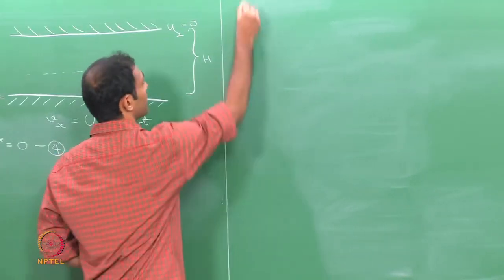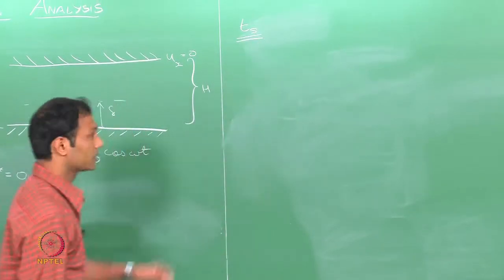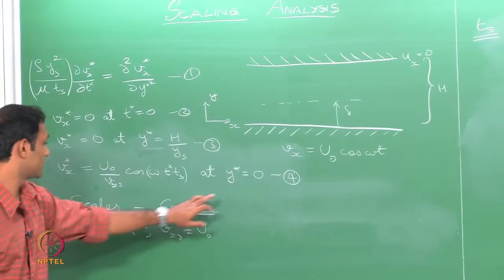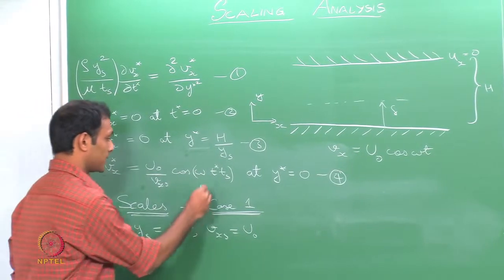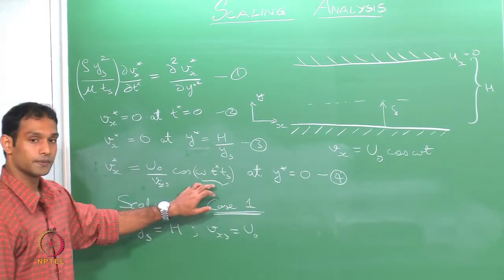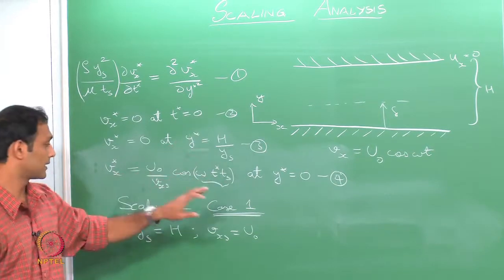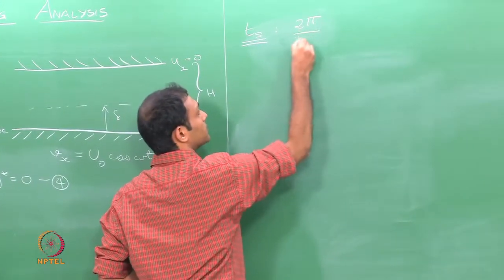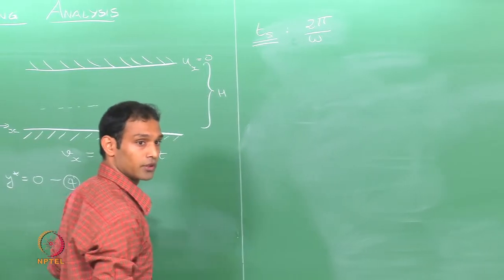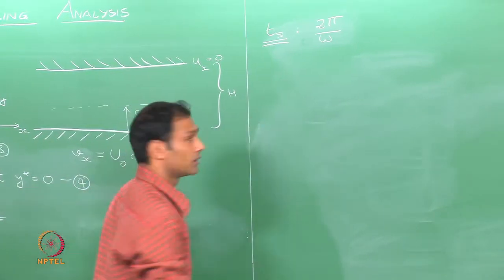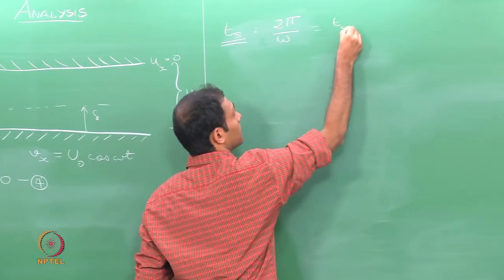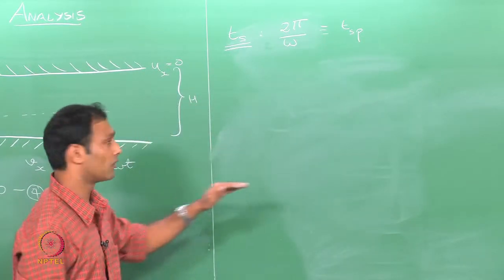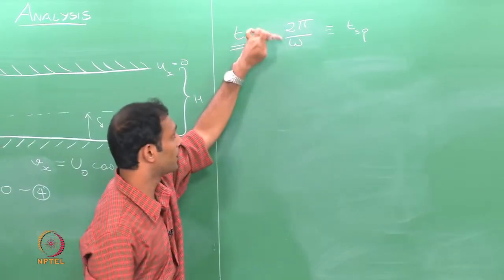Before substituting, we also need to choose a time scale. Looking at equation 4, we can make that term order of 1 and get a scaling for time directly, which means choosing the time scale as 2π/ω — the frequency of the wall motion. This can be called Tsp, the time scale associated with the periodic motion of the wall.